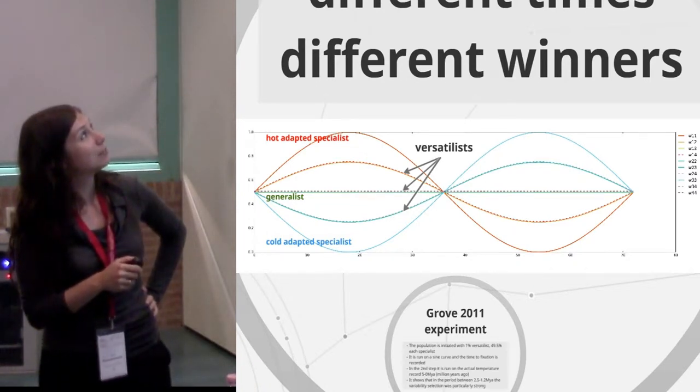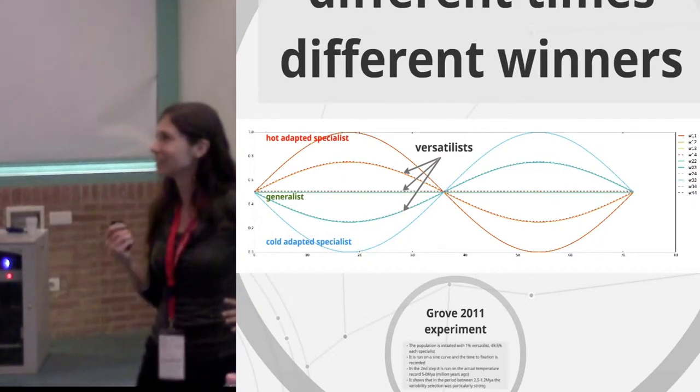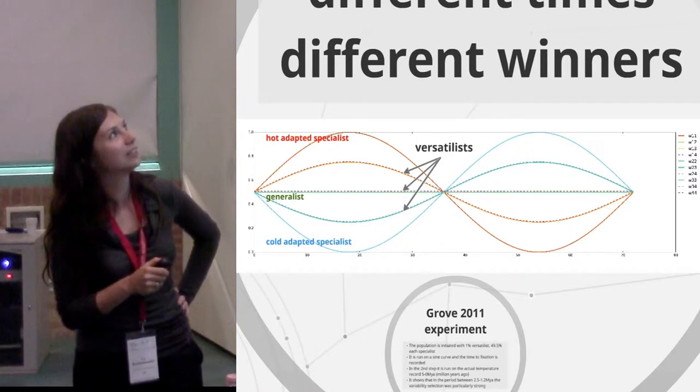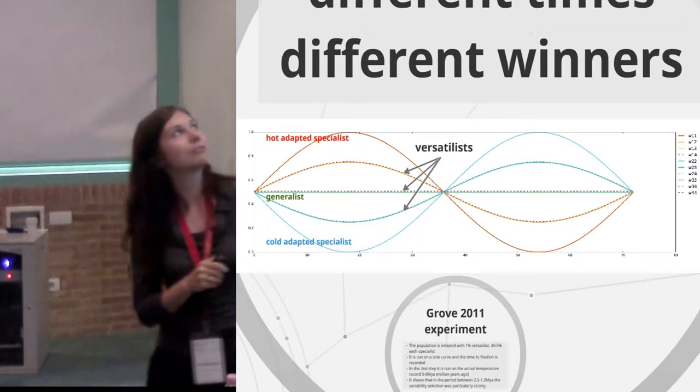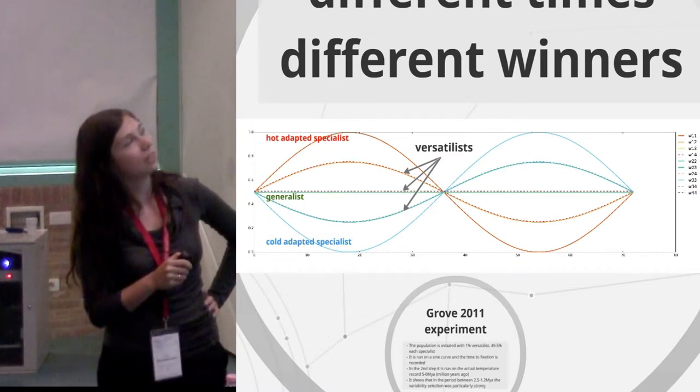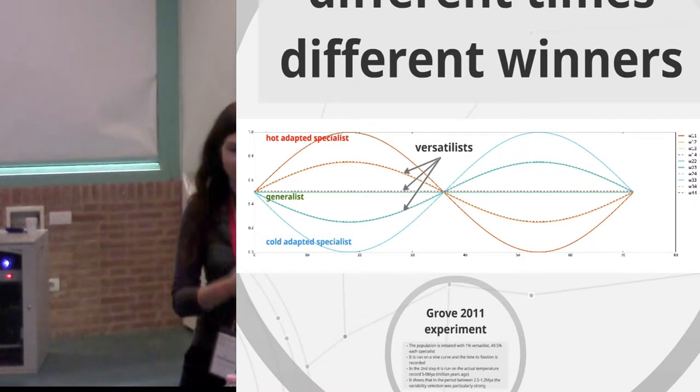And then the sine wave gets from hot to cold and the cold guys are just like, yes, we're gaining grounds. Whereas the hot guys are in decline. The generalists are doing not great, but okay throughout the whole thing. And so the versatilists, the adding boost is just the dotted line, which just adds a little bit of extra fitness.